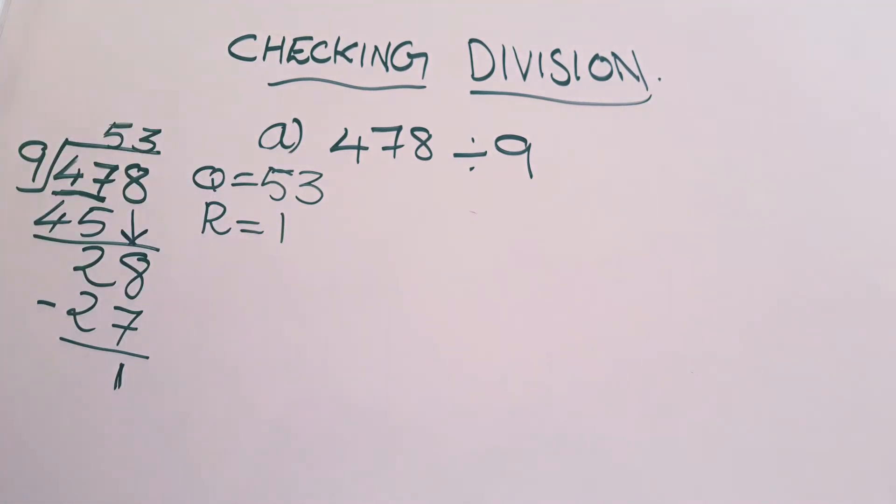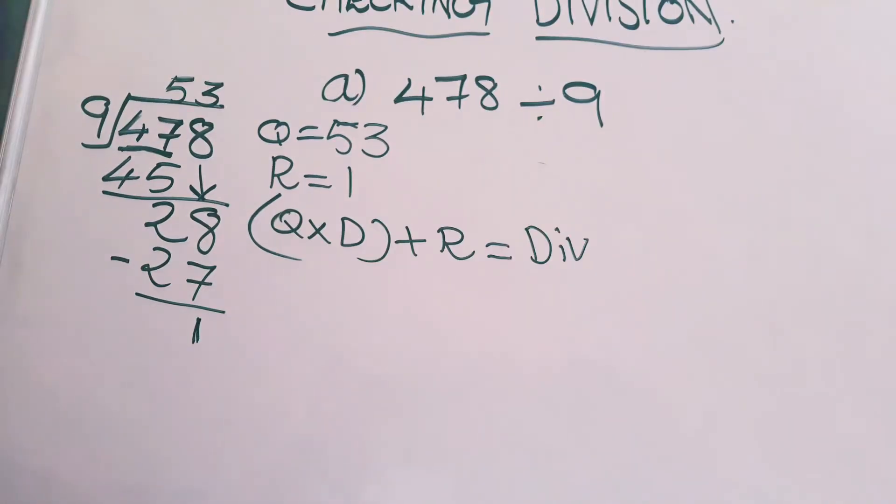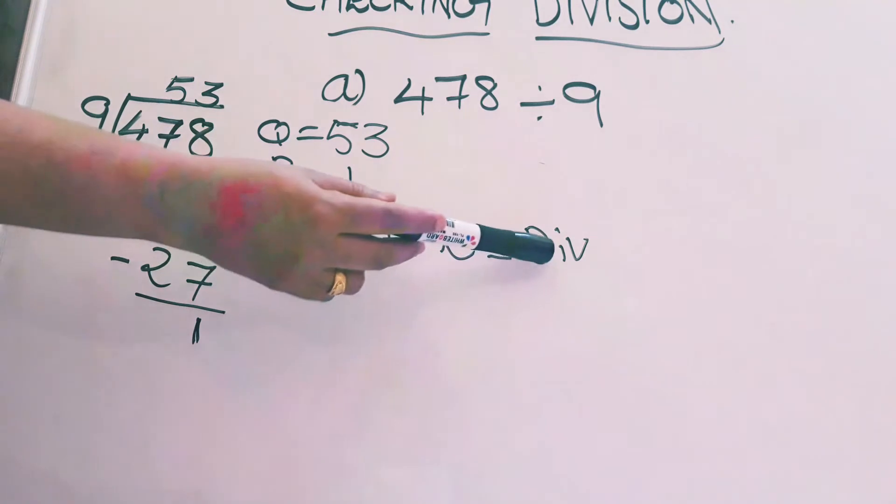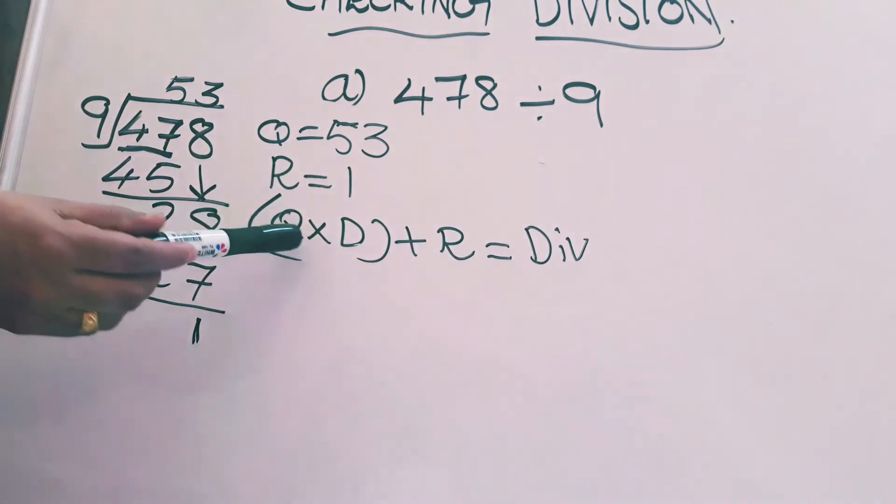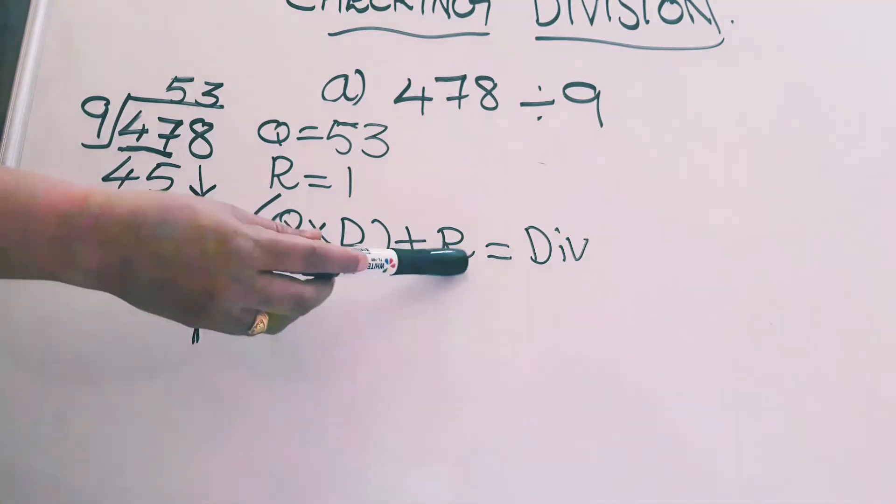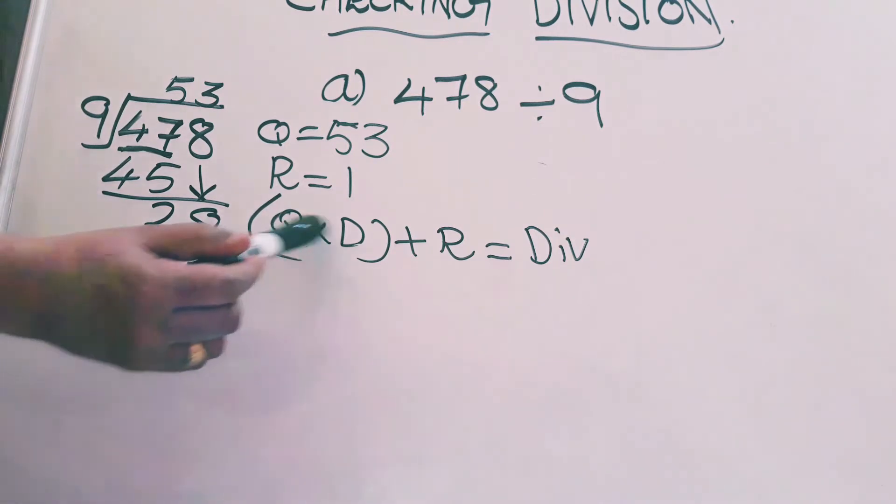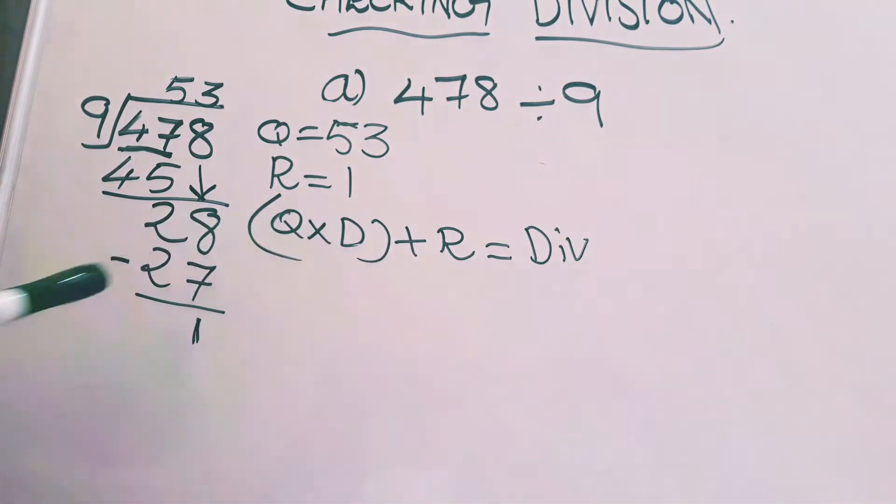Now let's see how to check this answer. For checking division, we should know one important thing: Q into D plus R is equal to dividend. Dividend short form is div. Q means quotient, D means divisor, R means remainder. If you feel difficulty to say the full form, you can make it as short form. Q into D plus R is equal to dividend.